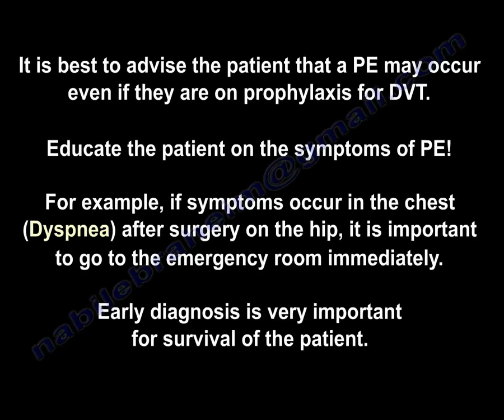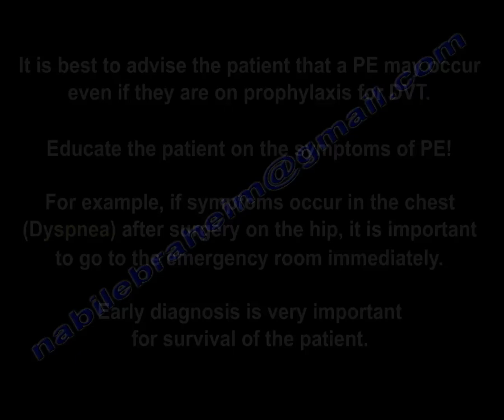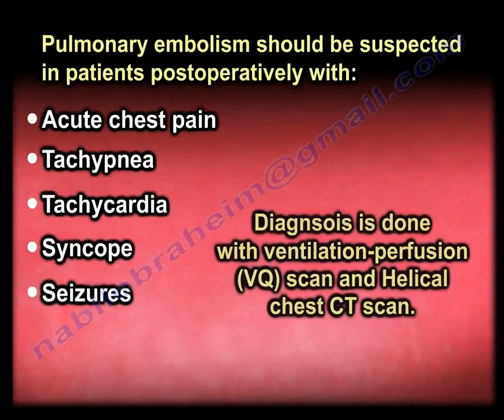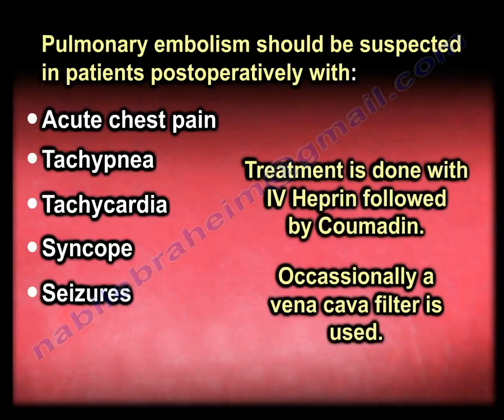For example, if surgery is performed on the hip or knee and the patient develops chest symptoms — dyspnea, difficulty breathing — they need to call the doctor immediately or go to the emergency room, because early diagnosis is critical for survival. Pulmonary embolism should be suspected postoperatively in patients with acute chest pain, tachypnea, tachycardia, syncope, or seizures. Diagnosis is usually made with a ventilation-perfusion VQ scan and helical chest CT scan. Treatment is done with IV heparin followed by Coumadin. Occasionally a vena cava filter is used.